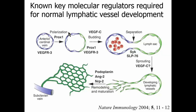In embryonic life, we start with a nascent vein called the anterior cardinal vein, and at least in the mouse where this work was originally done, at an embryonic day about nine and a half, we begin to see expression of Prox-1. We now know that this is under the sub-regulation of SOX-18, an upstream transcription factor to Prox-1, and eventually Prox-1 expression within the nuclei of one pole of this vein will begin to become apparent, rendering the cells sensitive to VEGF-C, which is the ligand that binds to the VEGFR3 receptor.